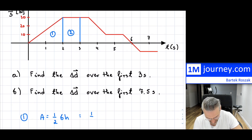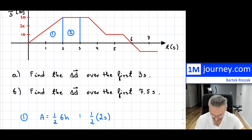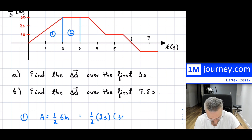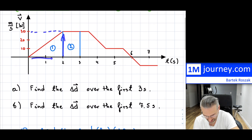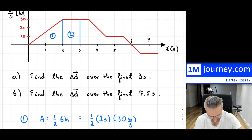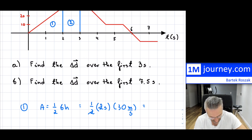If you calculate this, it's going to be one half. The base is the time, which is two seconds. The height is 30 meters per second — I'm reading this right off the graph. The two and two cancel out — two divided by two — so that's gone, giving me 30 meters.